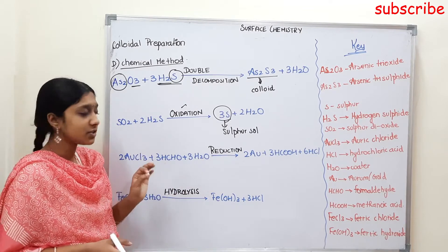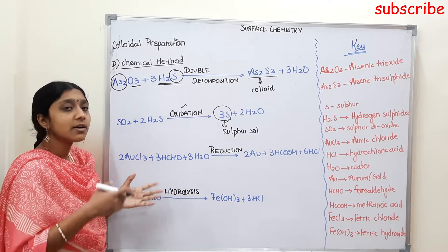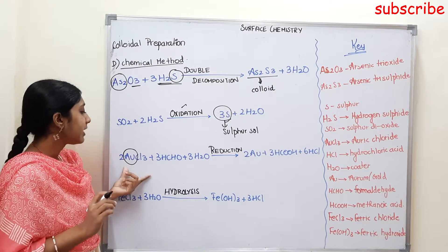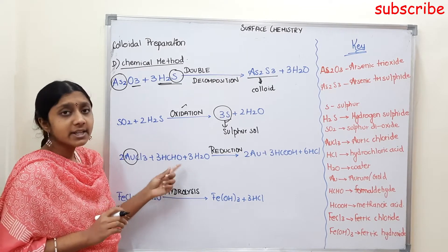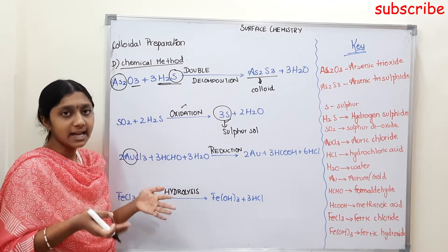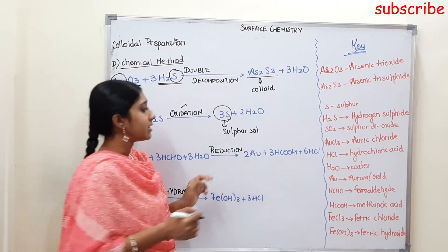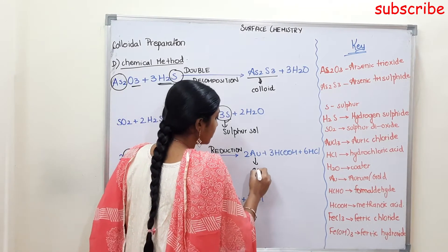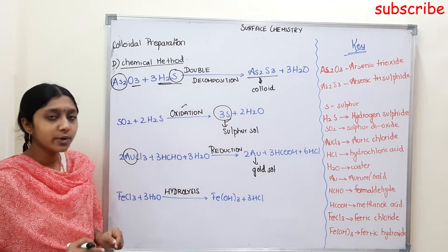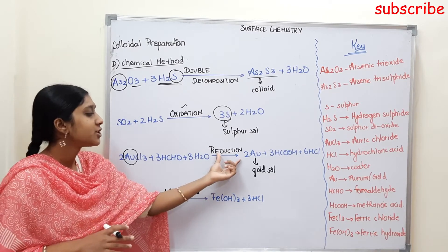The third reaction is a Reduction reaction. AuCl3, where Au is Gold, so AuCl3 is Auric Chloride. It reacts with HCHO, which is Formaldehyde. The products are Gold, Methanoic Acid, and Hydrochloric Acid as byproducts. This is the process of Reduction.